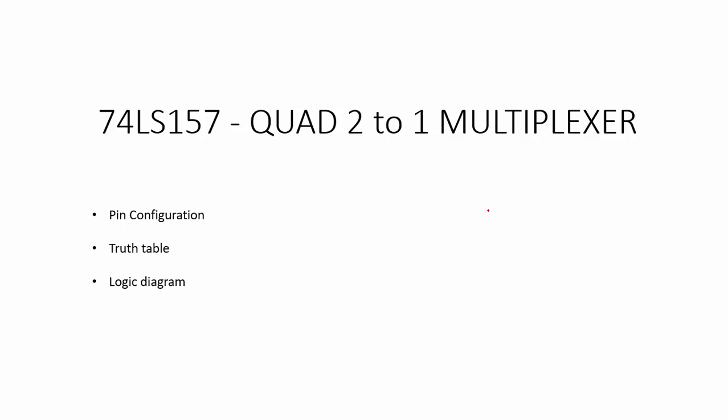In this video we shall look at pin configuration, truth table and logic diagram of 74LS157 IC. 74LS157 IC is a quad 2-to-1 multiplexer IC, meaning it will have 4 2-to-1 multiplexers.